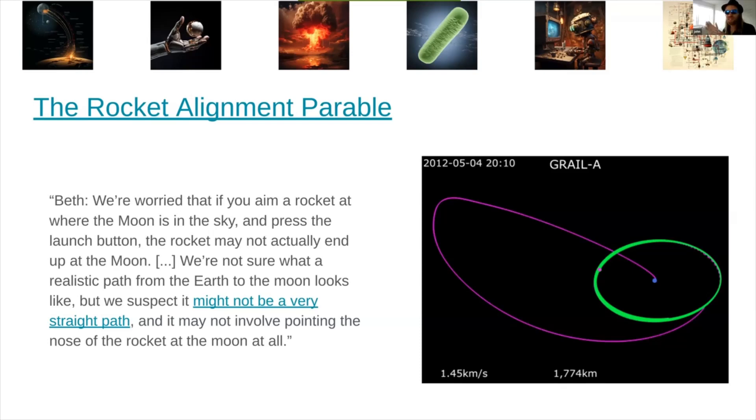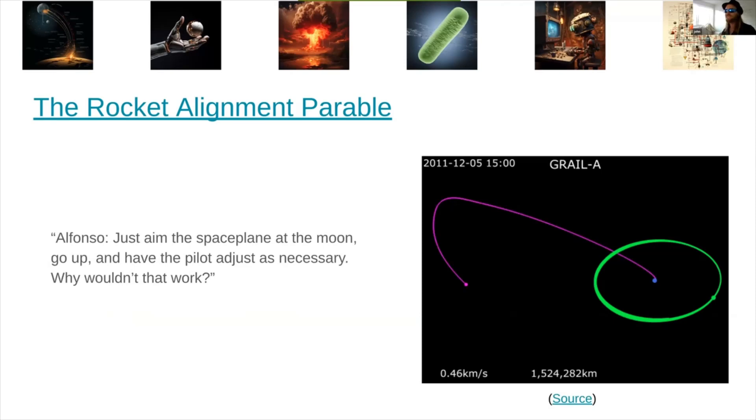Beth is a researcher in rocket alignment. Beth says, we're worried that if you aim a rocket at where the moon is in the sky and press the launch button, the rocket may not actually end up at the moon. We're not sure what a realistic path from the Earth to the moon looks like, but we suspect it might not be a very straight path. And it may not involve pointing the nose of the rocket at the moon at all. And you can see here an actual lunar injection orbit or trajectory. Indeed, it mostly does not involve pointing the nose of the rocket at the moon. And this is meant to be an analogy for the problem of installing values into an AI or generally trying to steer what an AI ends up doing. The sort of obvious thing to do is give an AI a reward when it does something you want. Give it some sort of negative feedback when it does something you don't want. That's the obvious thing to do. The analogy of pointing the nose of the rocket at the moon. And the basic concern here is that if you just do that, it's going to do something weird and different that we don't really understand yet.